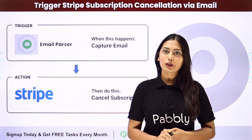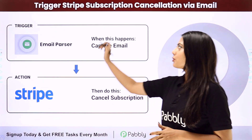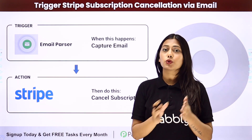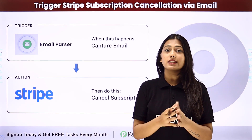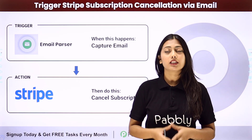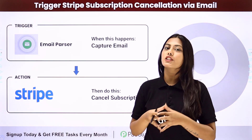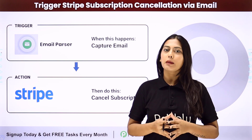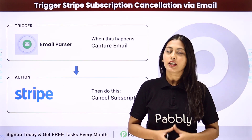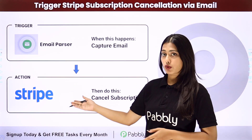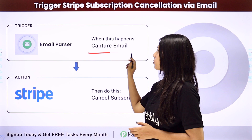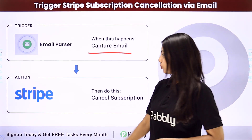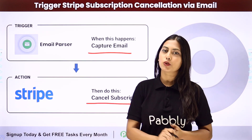Hello everyone. In this video we are going to learn how to trigger Stripe subscription cancellation via email. When a person wants to cancel their Stripe subscription, they will send an email with the subscription ID to raise the cancellation request. For this process, we are going to create an automation with the help of Pabbly Connect, where we will integrate email parser and Stripe — the trigger will capture email using email parser by Pabbly, and the action will cancel the subscription using Stripe.